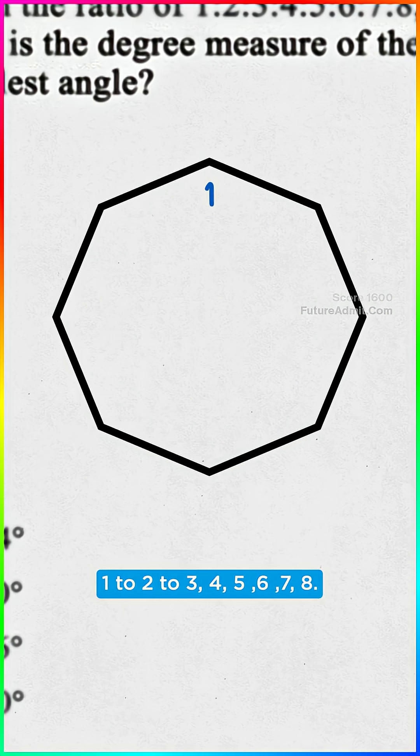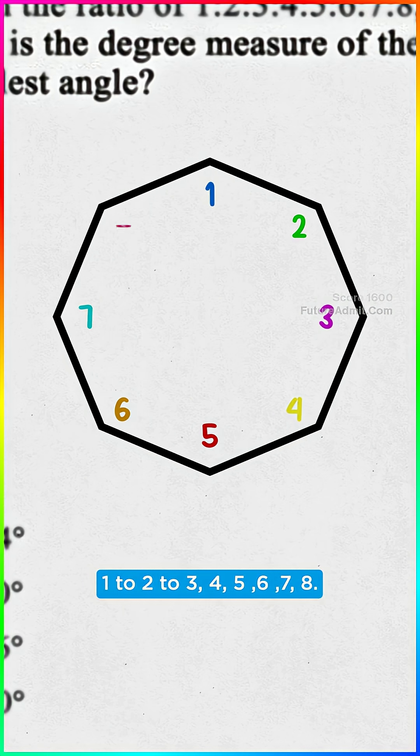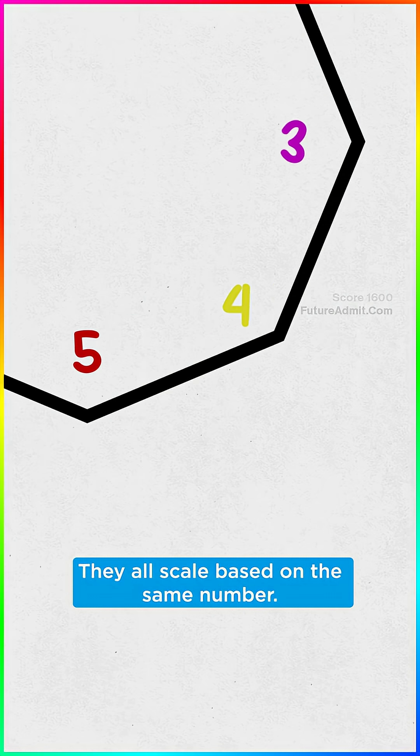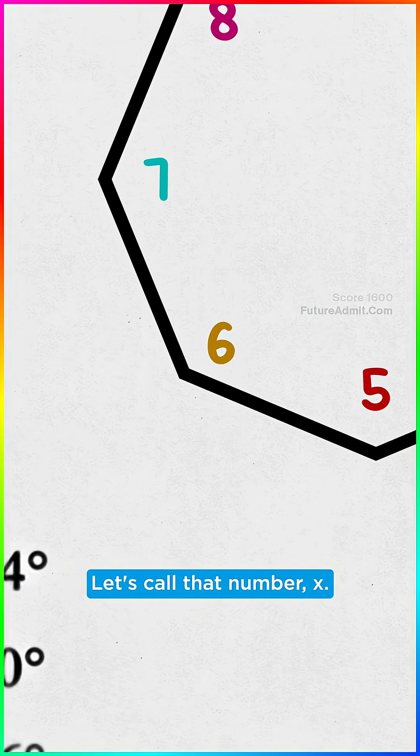They come in this ratio of one to two to three, four, five, six, seven, eight. What does that mean? Well, these angles are proportional. They all scale based on the same number.